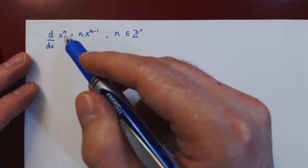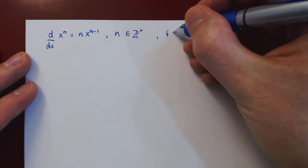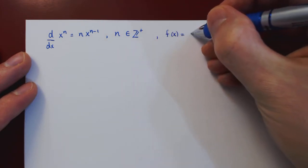So here clearly the function that we are interested in is x to the n. So f of x is x to the n.